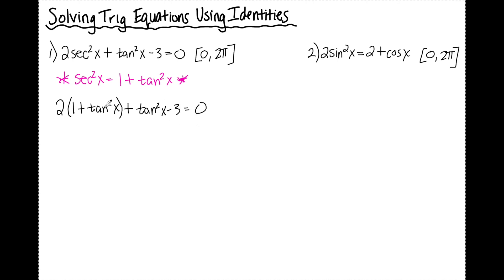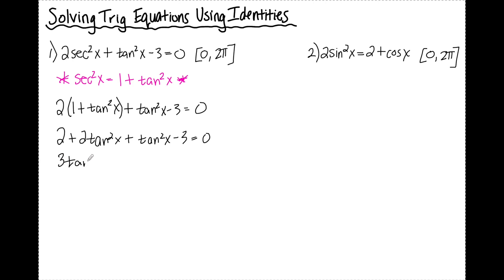From here I'm going to continue solving. First I'll get rid of the parentheses by distributing the 2, then carry down the rest of my equation. I can combine the 2 tan squared and the 1 tan squared to get 3 tan squared, and positive 2 minus 3 gives me minus 1.